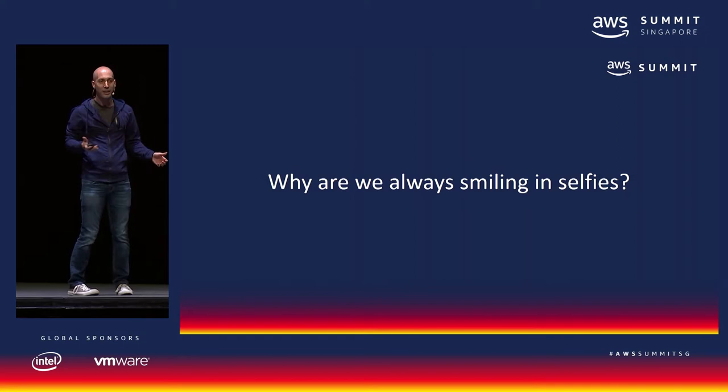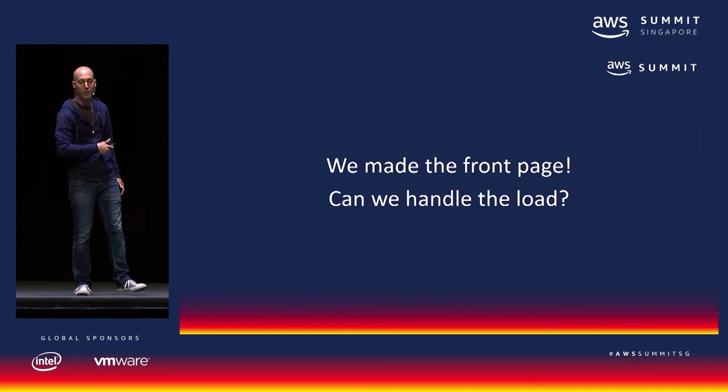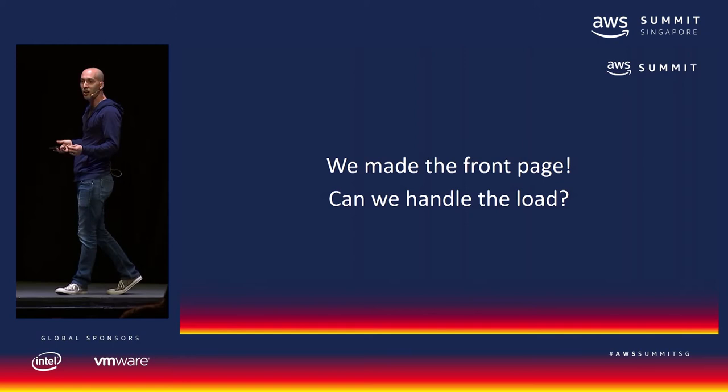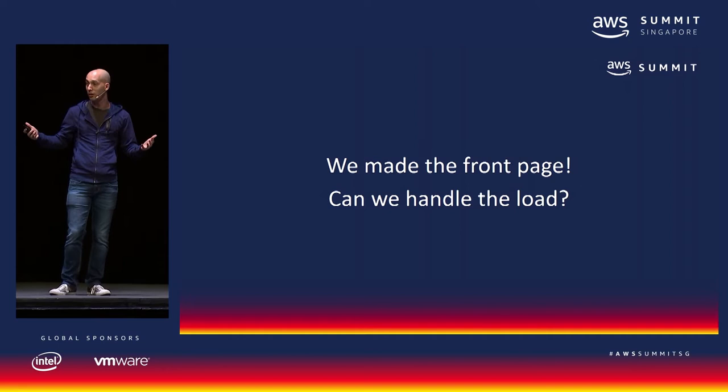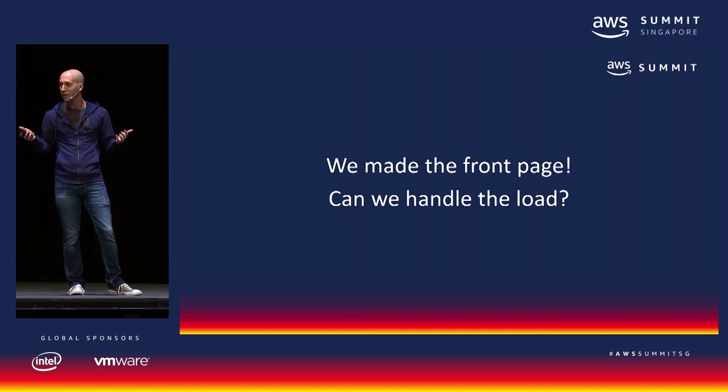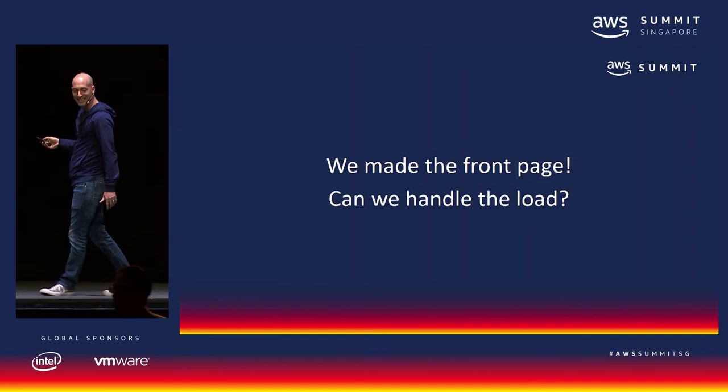Let's pretend I work for a big photo company that wants to run an online contest encouraging people to take selfies with a wide variety of emotions, giving awards for the best selfies showing different emotions, not just smiling. What if I published this online and it made the front page — Reddit, Hacker News? Can we handle the load? Is the online submission system going to scale to meet that load? Well, I work for AWS, but we can simulate such a contest here today. I want to introduce the Awesome Selfie Challenge.